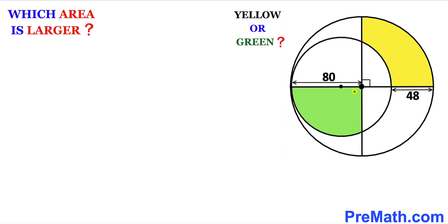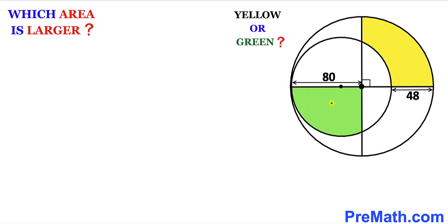Welcome to Premath. In this video we have these two circles put together, as you can see in this diagram, such that they are tangent to each other at this point. Moreover, this is the center of the larger circle and this is the center of the smaller circle. The radius of the larger circle is 80 units, this segment is 48 units, and our task is to find out which area is larger — the yellow area or the green area — and justify our answer.